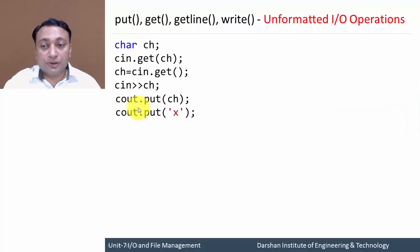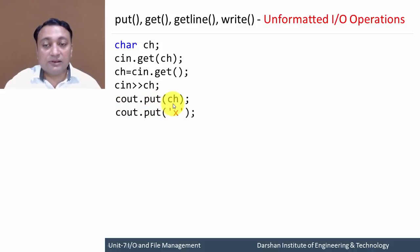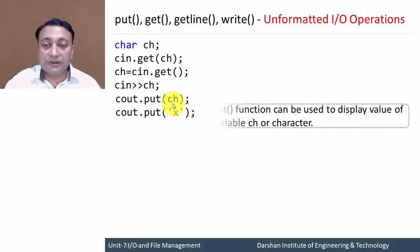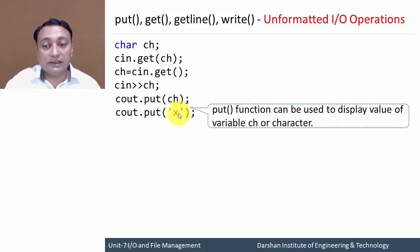Next is put. The put function can be accessed using cout. cout is an object of the oStream class, and put is a member function of oStream. So we are accessing the put member function using the cout object. This will display a character on the monitor. We can provide any symbol between single quotes, or use put to display the value of a variable ch.